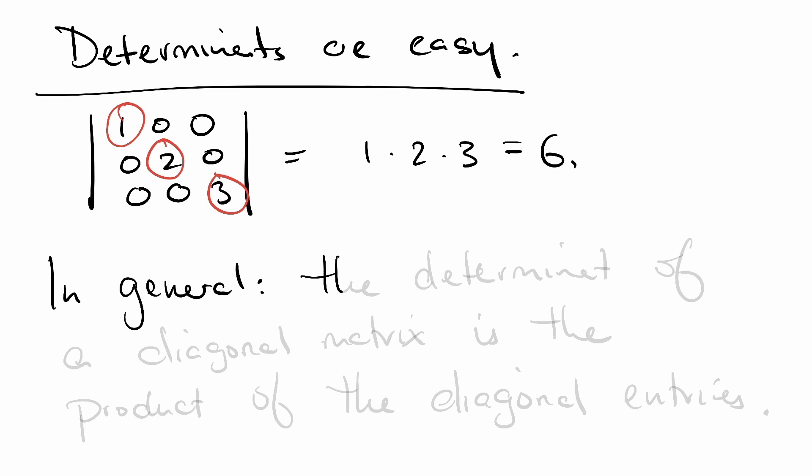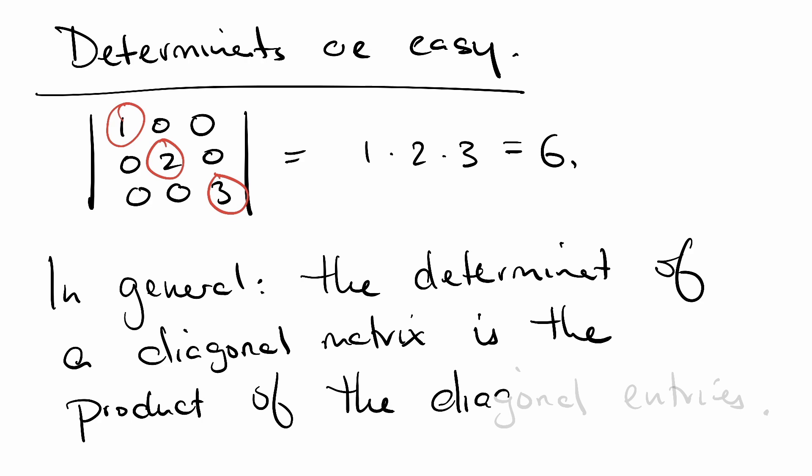In general, the determinant of a diagonal matrix is just the product of the diagonal entries. This is much better than non-diagonal matrices or non-triangular matrices.